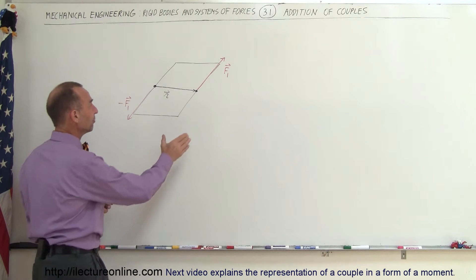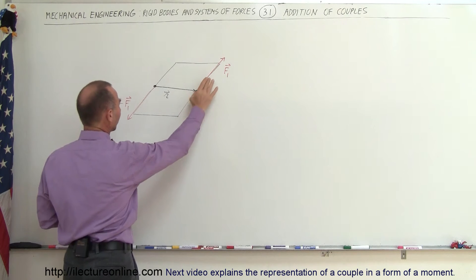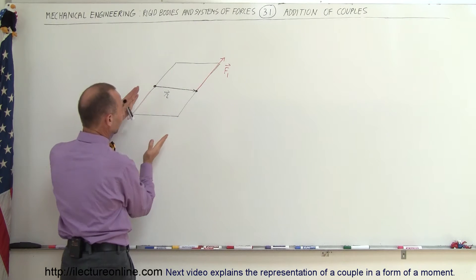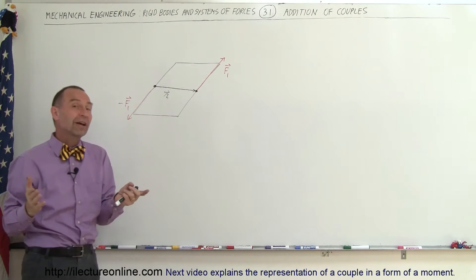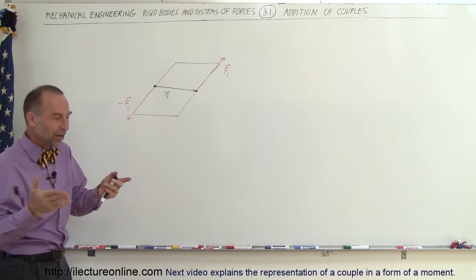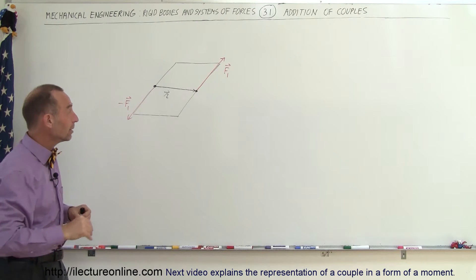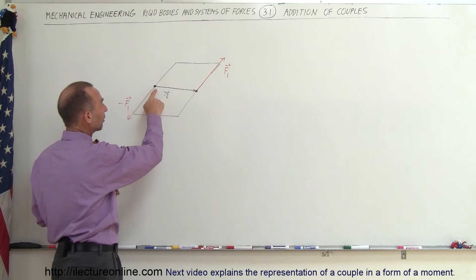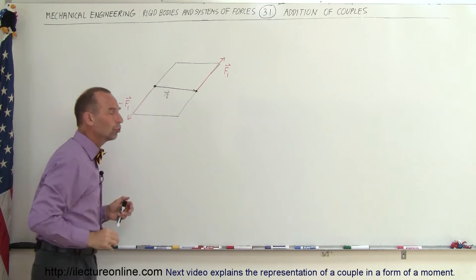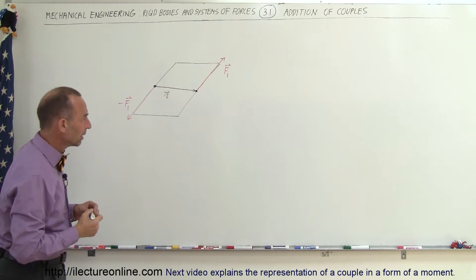So first of all we have two forces. They're equal in magnitude, opposite direction. They're acting along this plane. Of course any two vectors acting in opposite directions will always form a plane between them. And then the vector R is the vector between the two points at which the two forces are acting.